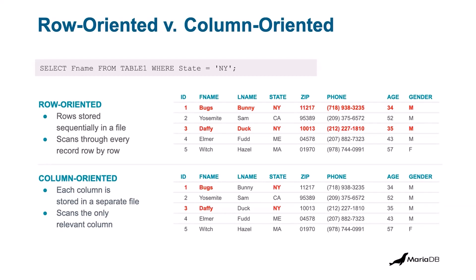In row-based storage, the particular column you plan on using in your filters — like a WHERE clause — needs to be indexed, and indexes add their own overhead to a system. In ColumnStore, you don't have to do that because we have something called extent maps. Extent maps tell us where the data is located — it's our own indexing system, telling us which files, etc. So we have to parse much less data. We go directly to the file and to the extent where the data is located, looking at only one column. We don't have to parse the entire row, and we can return that data very quickly.